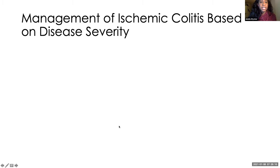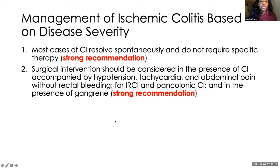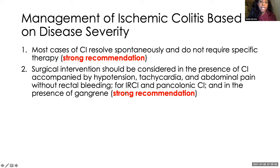How do we manage ischemic colitis? There are three strong recommendations. Most cases are self-resolved and don't require specific therapy — these are usually mild cases. For more severe scenarios requiring surgical intervention, this would be strongly recommended if patients have any evidence of shock, hypotension, or tachycardia. Abdominal pain without rectal bleeding is an indicator of poor prognosis. Isolated right-sided ischemic colitis or pancolitis is also an indicator of poor prognosis.